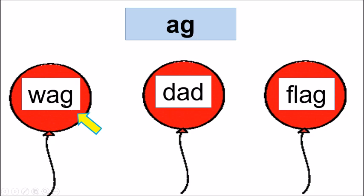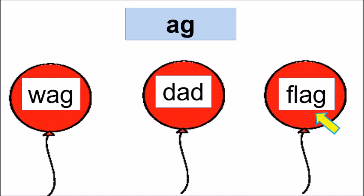Now let us read this word — Wag. Now read this word, children — Dad. And what is this word? — Flag. Now tell me, children, which word does not belong to the AG family?